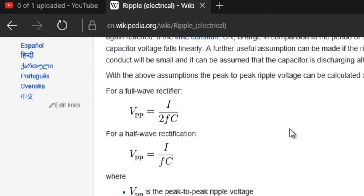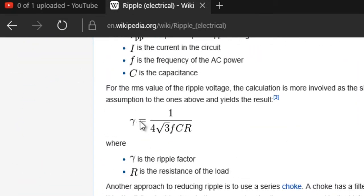The formula for ripple factor of a full wave bridge rectifier is given by 1 by 4 root 3 FCR, where F is the frequency of the input signal, C is the capacitance, and R is the resistance. As you can see from this formula, if you increase R, your ripple factor should decrease.